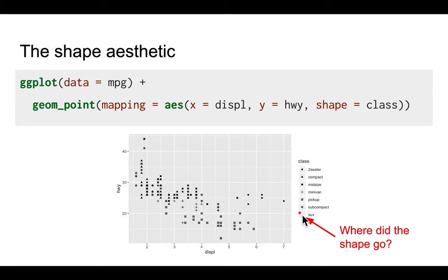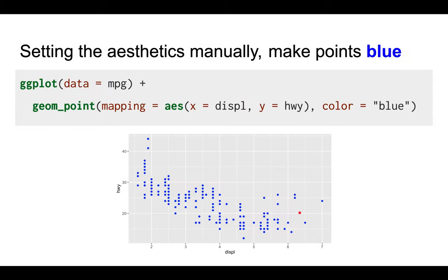Finally, you can also set the aesthetics manually instead of automatically based on the data. Here's an example where we make the points blue in color - perhaps blue is your favorite color. You basically specify the option color equals blue outside the aesthetic mapping.